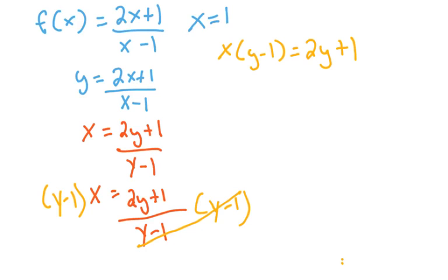Now we're just doing some algebra here. You got to distribute that. So that gives us xy minus x equal to 2y plus 1. So now we're going to subtract 2y from both sides and add an x to both sides. So we're going to subtract 2y from both sides.